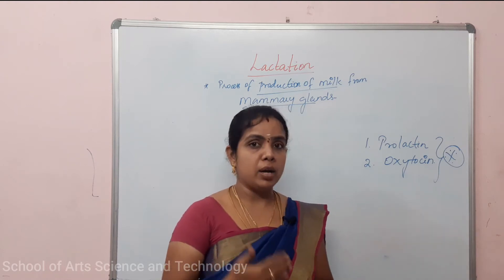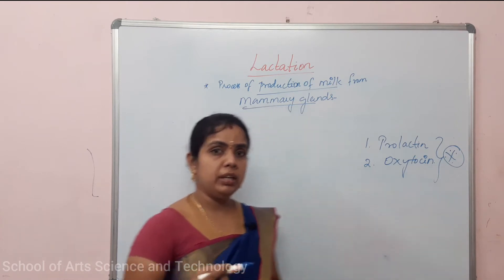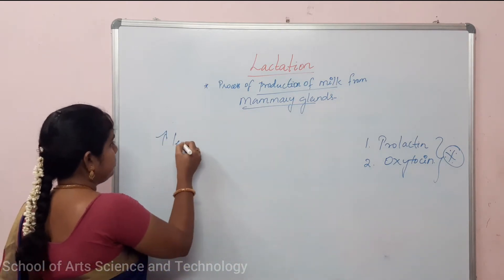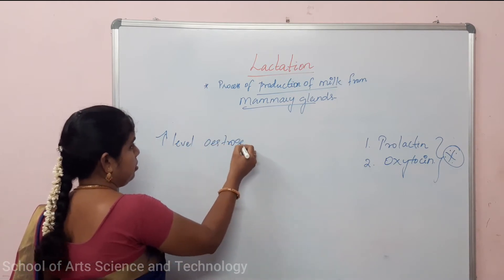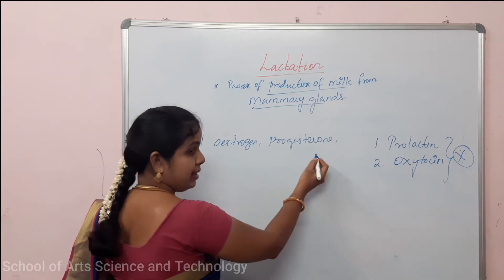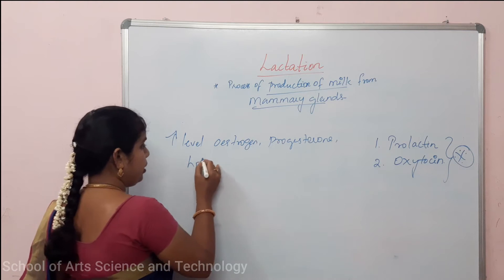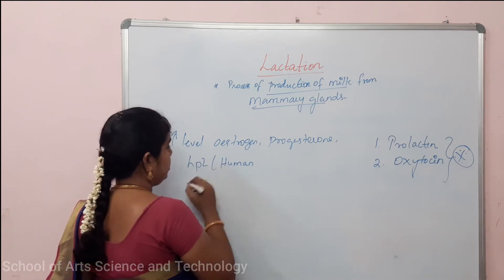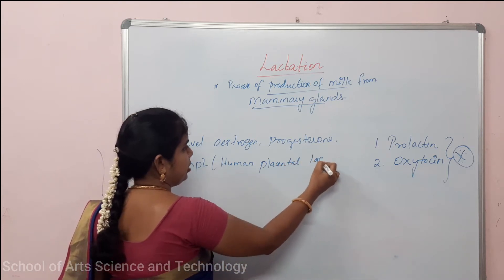During the time of pregnancy, the prolactin hormone is secreted. There is already an increased level of estrogen and progesterone. Also present is HPL — Human Placental Lactogen — which is already secreted as part of the hormonal environment during pregnancy.